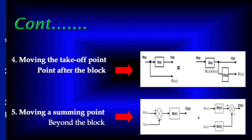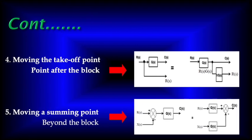Moving the take-off point after the block: This point moves to after the block. Then this signal is R(s) into G(s). If we multiply by 1 by G(s), then we get the signal R(s). This ensures the original signal is preserved.